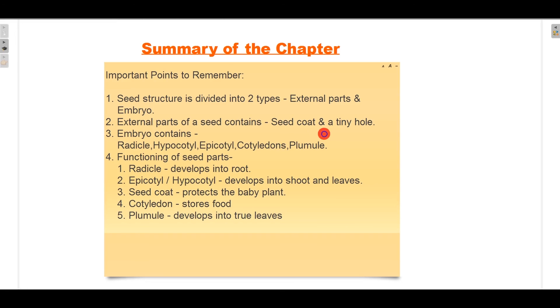Third point: Embryo contains radical, hypocotyl, epicotyl, cotyledon, and plumule. Fourth point: Functioning of seed parts. Radical develops into root. Epicotyl and hypocotyl develop into shoot and leaves. Seed coat protects the baby plant. Cotyledon stores food. Plumule develops into true leaves.